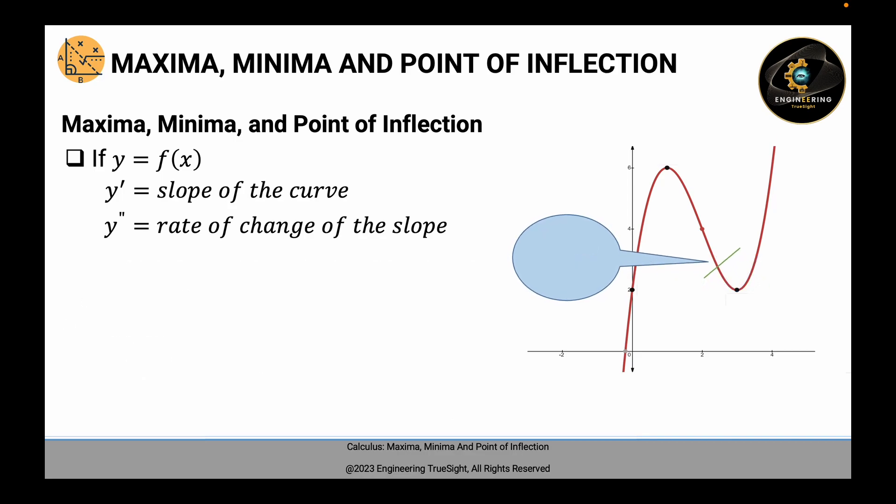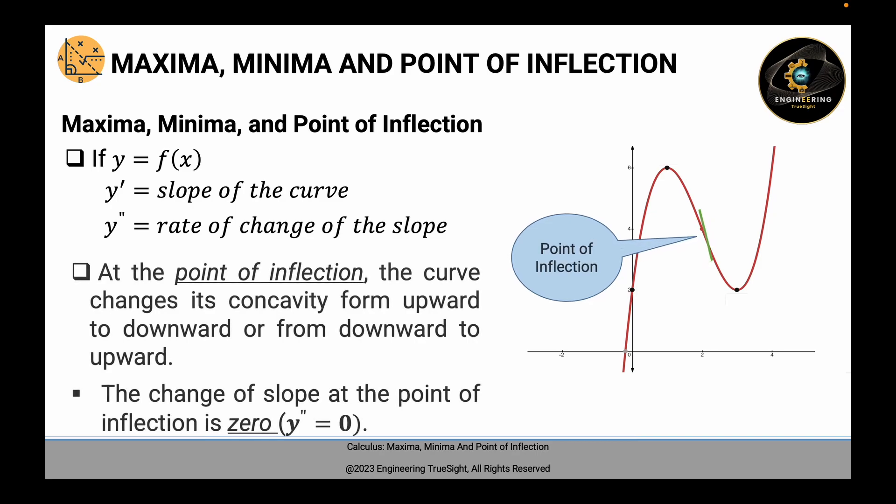For the point of inflection, the curve changes its concavity from upward to downward, or vice versa. The change of the slope at the point of inflection is 0 — that is, y double prime is 0.